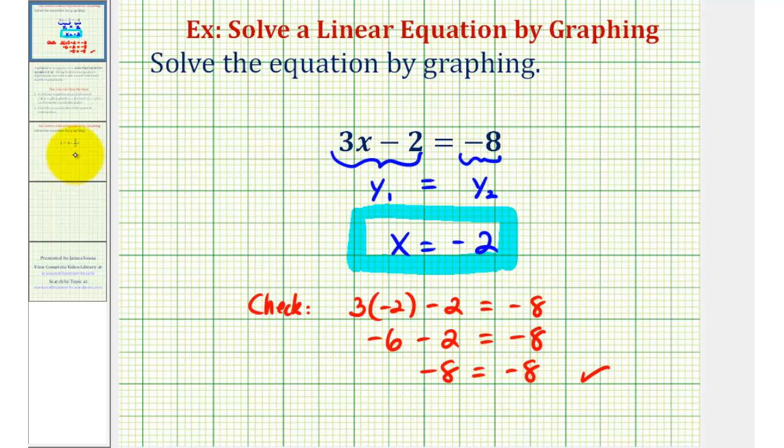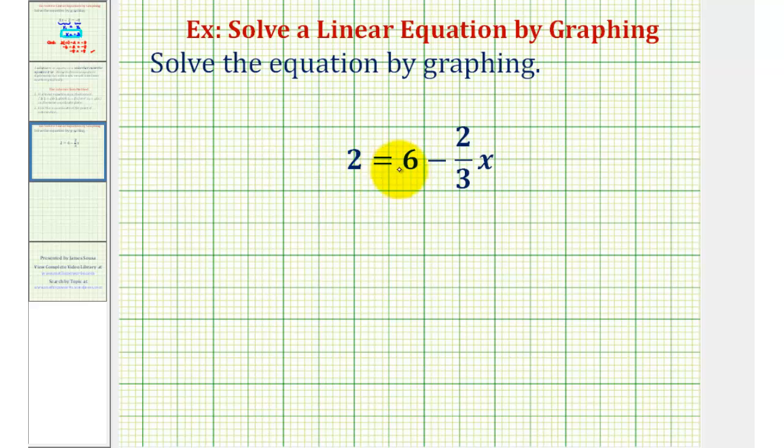Let's take a look at a second example. Here we have 2 equals 6 minus 2 thirds x. So we'll let y1 be equal to 2, and we'll let y2 be equal to 6 minus 2 thirds x. And now we'll graph both linear equations on the same coordinate plane and determine for which x value they would be equal.